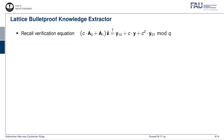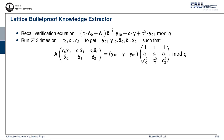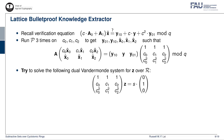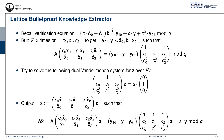Let us look at how a knowledge extractor can be constructed for the lattice bulletproof. This time, the knowledge extractor runs the prover P three times on three different challenges C0, C1, and C2, to obtain three different accepting communication transcripts. In matrix form, these satisfy the verification equation shown on screen. Then the knowledge extractor tries to solve the following three-dimensional dual-Vandermonde system for a vector Z over the ring R. If successful, it can compute the witness X tilde as shown.